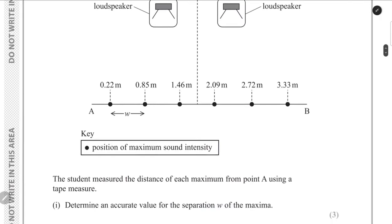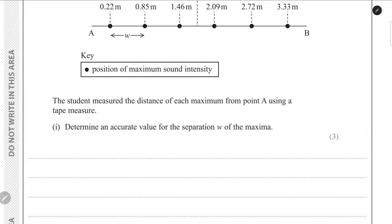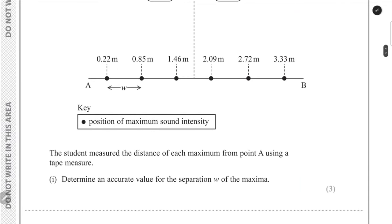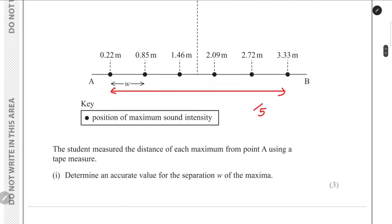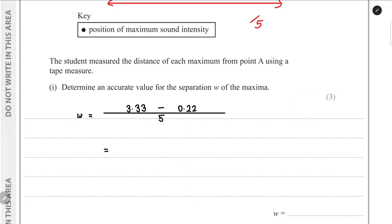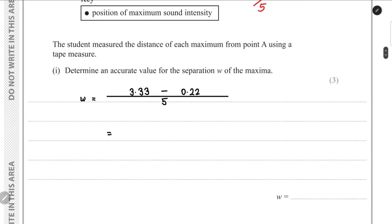Moving on to part B, we have to find the separation between the maxima. We are given 5 maxima positions. The total span is 3.33 minus 0.22, and we divide by 5 to get the average fringe spacing W. So W = (3.33 − 0.22) / 5 = 0.62 meters.